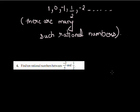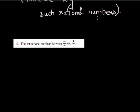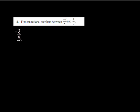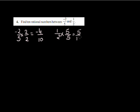The next question: find 10 rational numbers between -2/5 and 1/2. I need to convert both fractions to the same denominator. Converting -2/5 to denominator 10 gives -4/10, and converting 1/2 to denominator 10 gives 5/10.